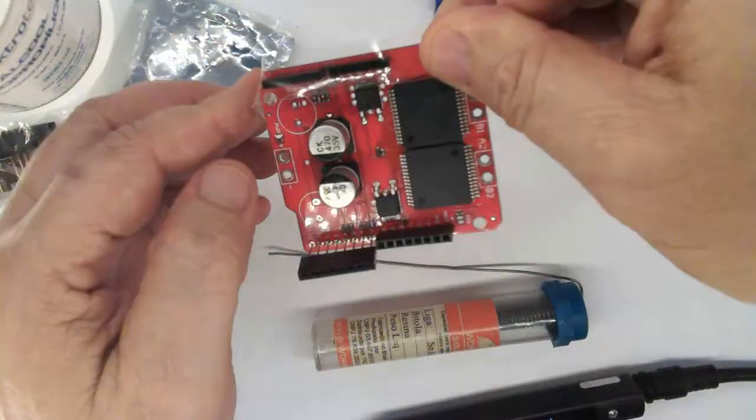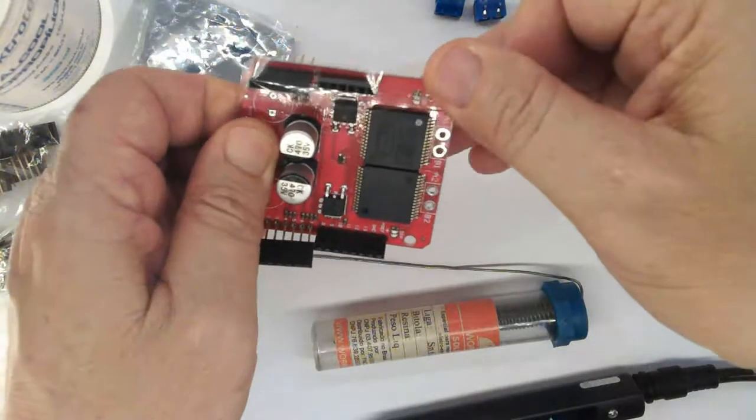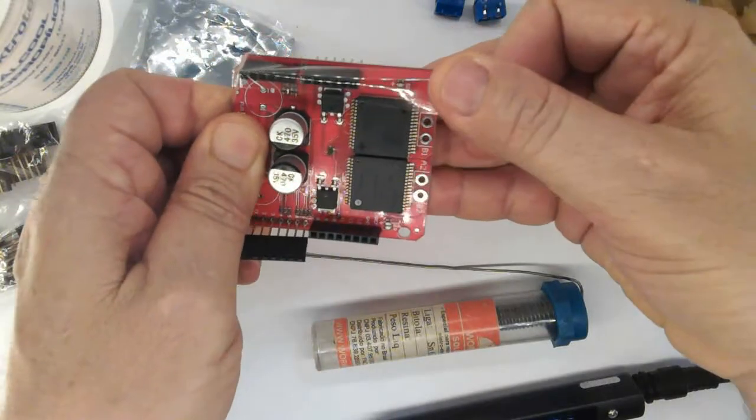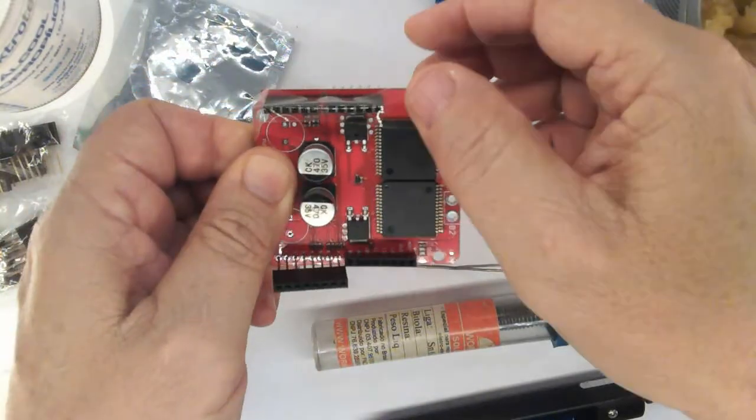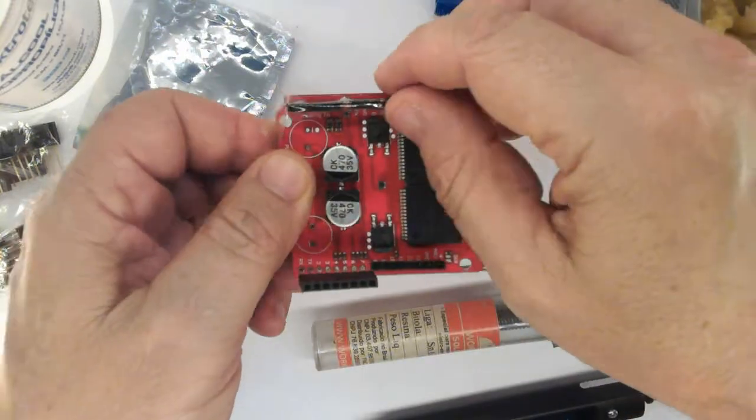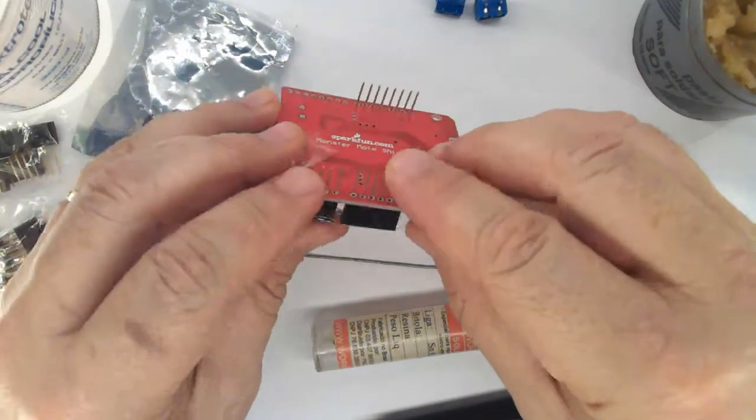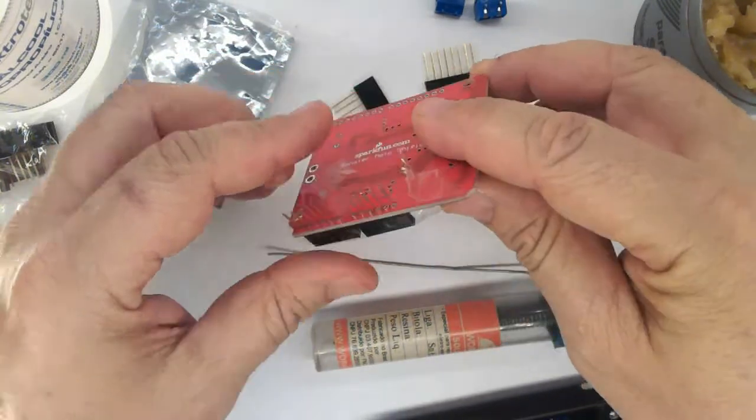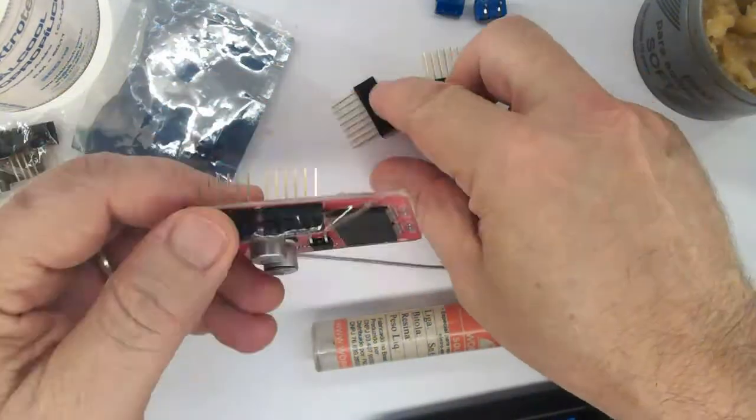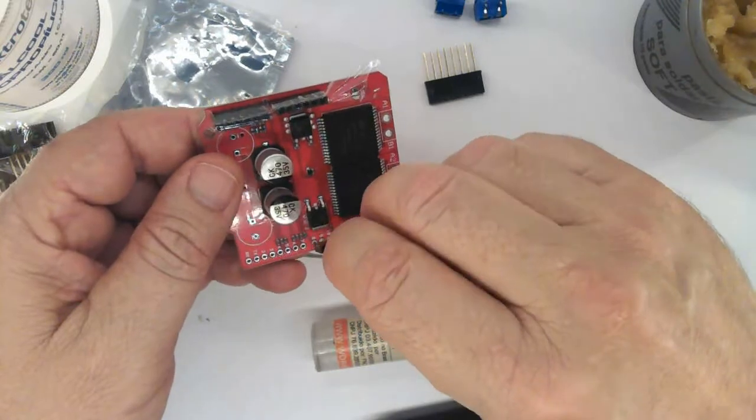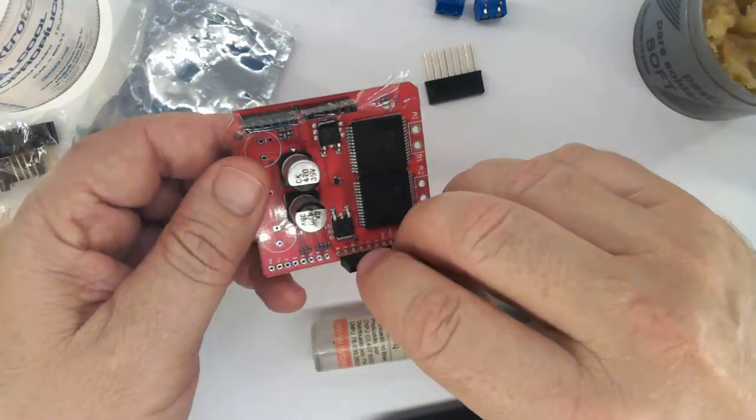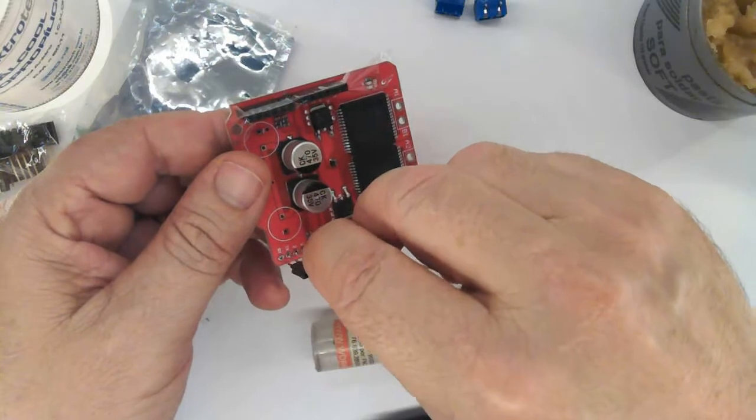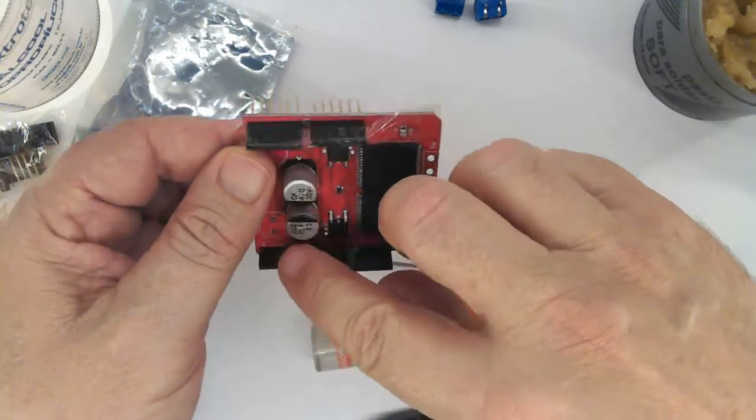To fix in place during soldering, we use transparent tape like this. For the other side, repeat the same procedure.